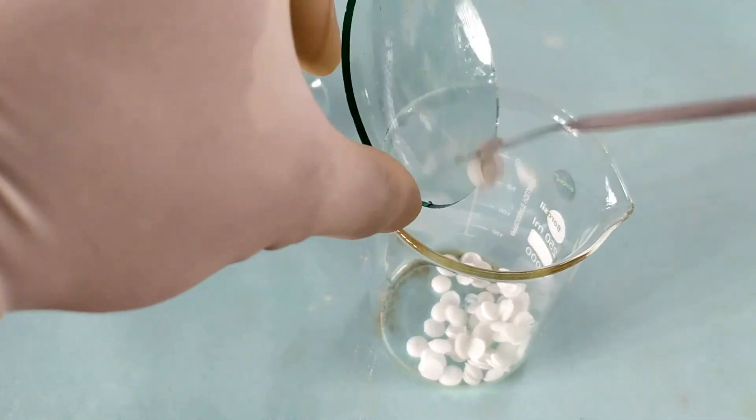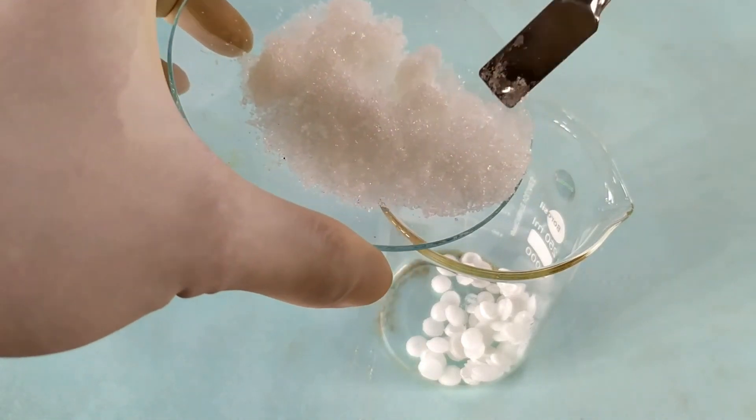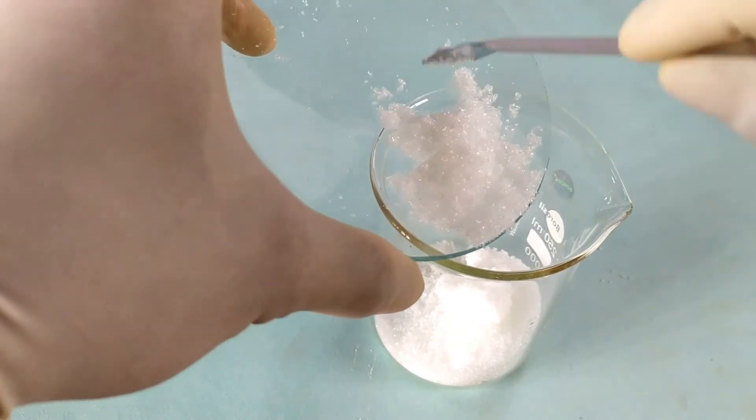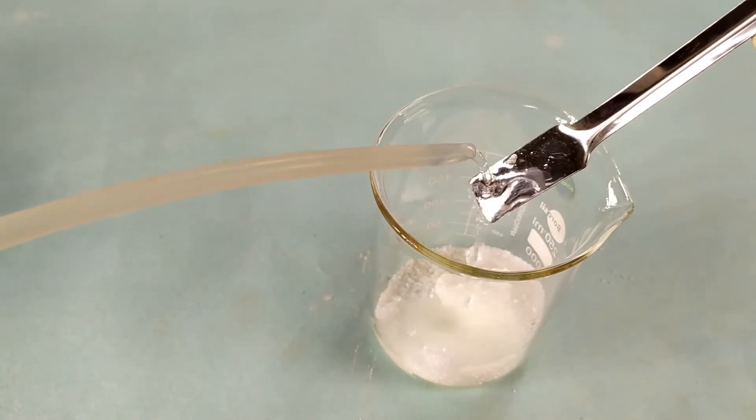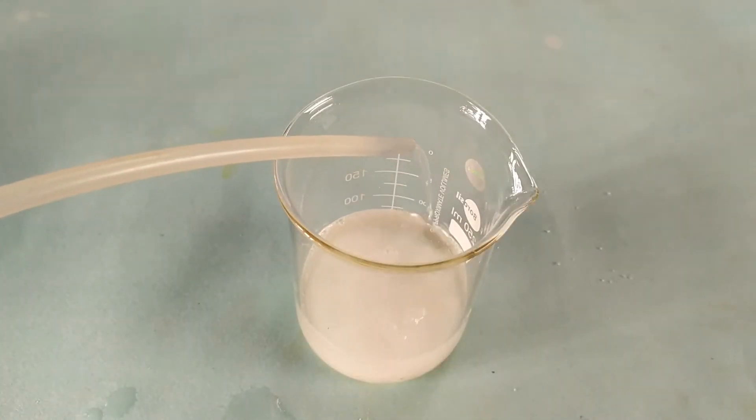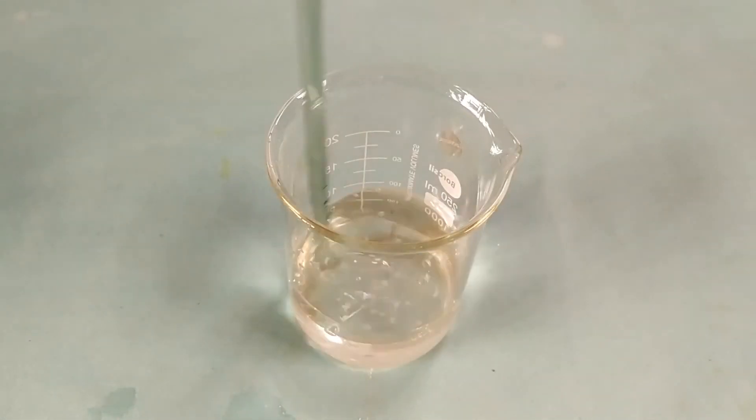To prepare reagent-B, weigh 35 g of potassium-sodium tartrate and 12 g of sodium hydroxide in separate watch glasses using an analytical balance. Transfer the two salts into a beaker and rinse the spatula using a small amount of distilled water. Add about 40-50 ml of distilled water into the beaker and stir the contents until the two salts dissolve completely.